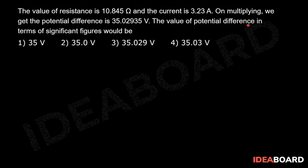The value of potential difference in terms of significant figures would be - here students, given that resistance R equals 10.845 ohms and current I equals 3.23 amps, the potential difference is given by V = IR, which can be obtained as 35.02935 volts.